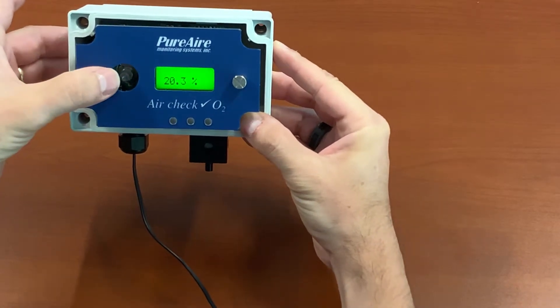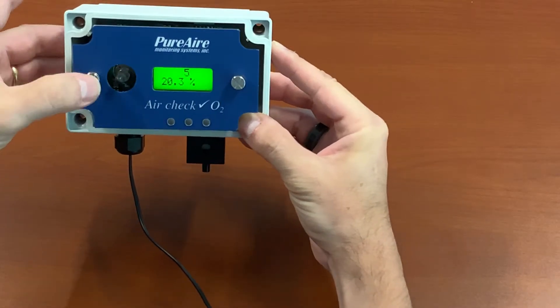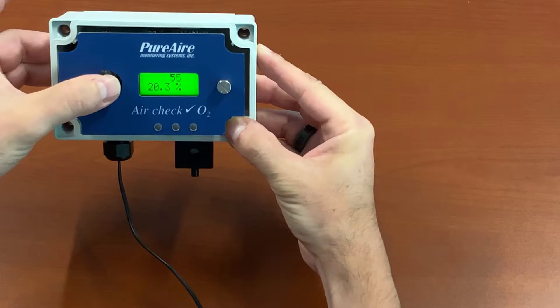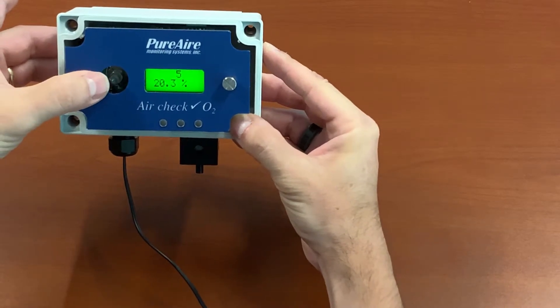Once you get to the number five, you're going to move the joystick to the right again. You're going to do this until you get to 557. That is the password, the factory default password for the monitor.